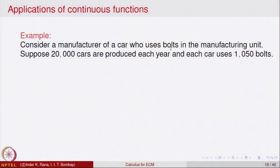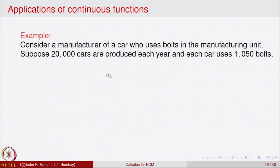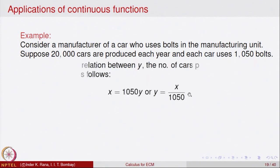Consider a manufacturer of a car who uses some bolts in the manufacturing unit. The data given is that 20,000 cars are produced each year by that manufacturer, and each car uses 1050 bolts for its manufacture. If we want to interpret the relation between the two, what is the total number of bolts being used?